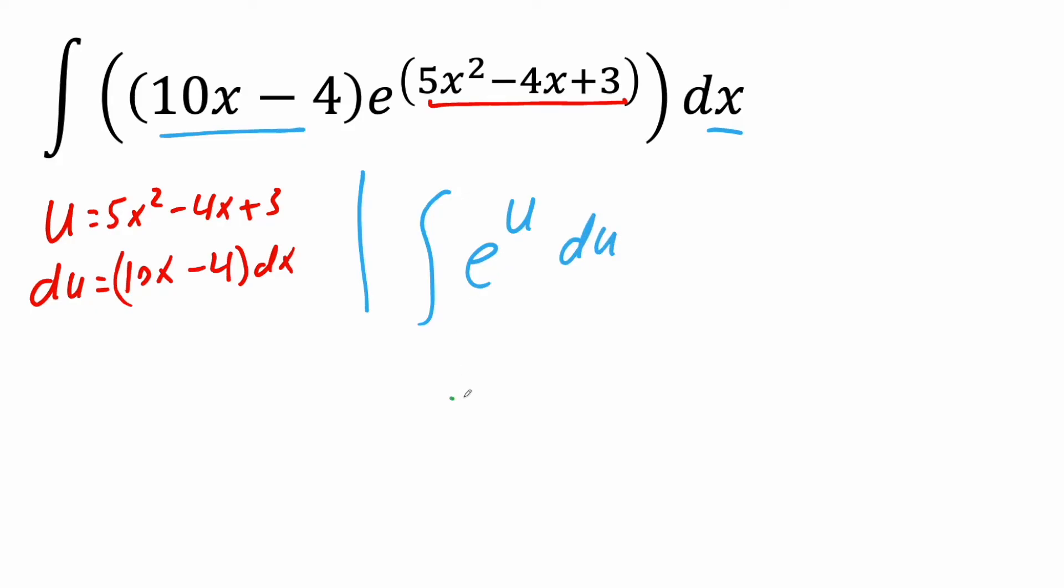And the integral of e raised to u is just e raised to u plus c. And then our last step is to swap back. So we know u is this right here, 5x squared minus 4x plus 3.